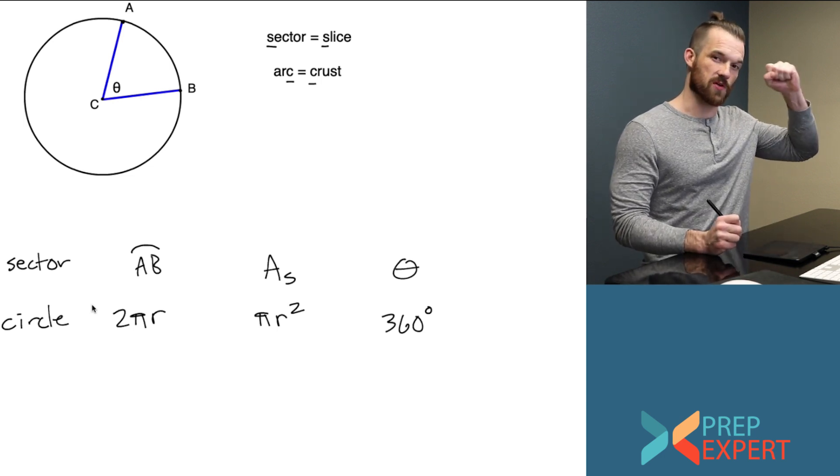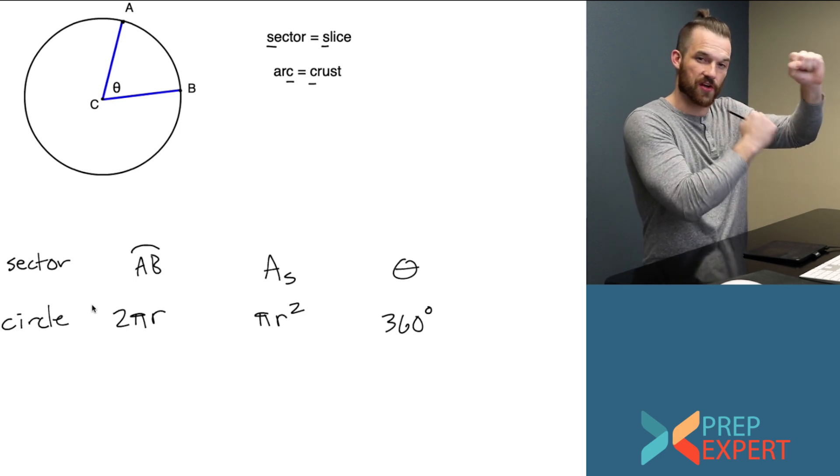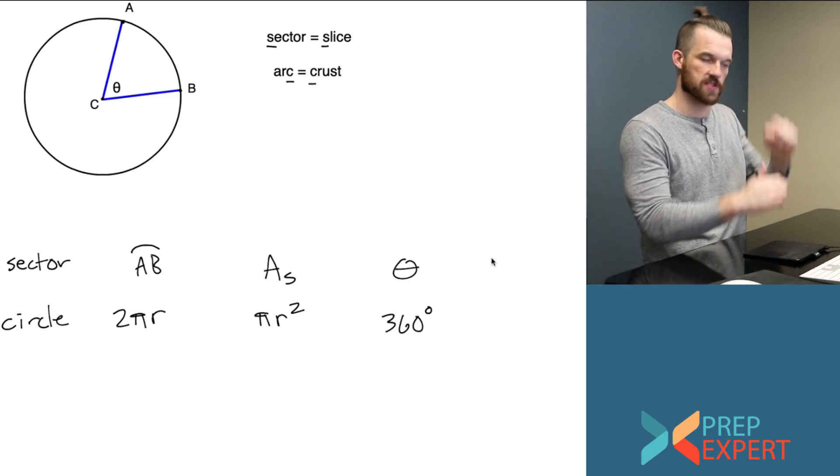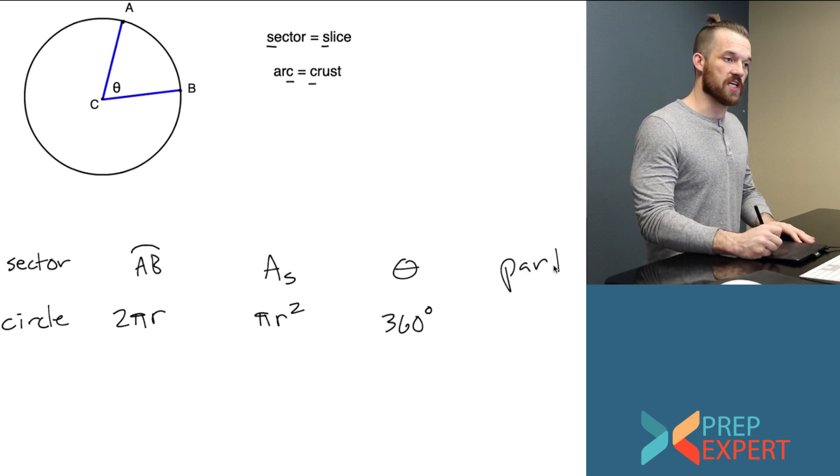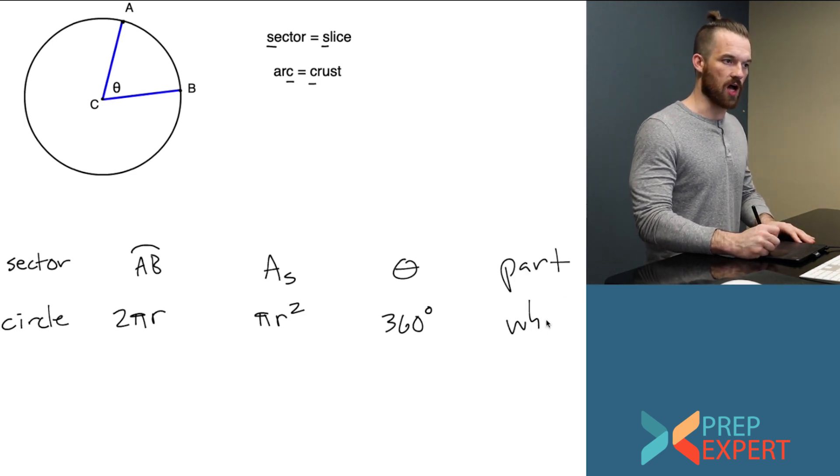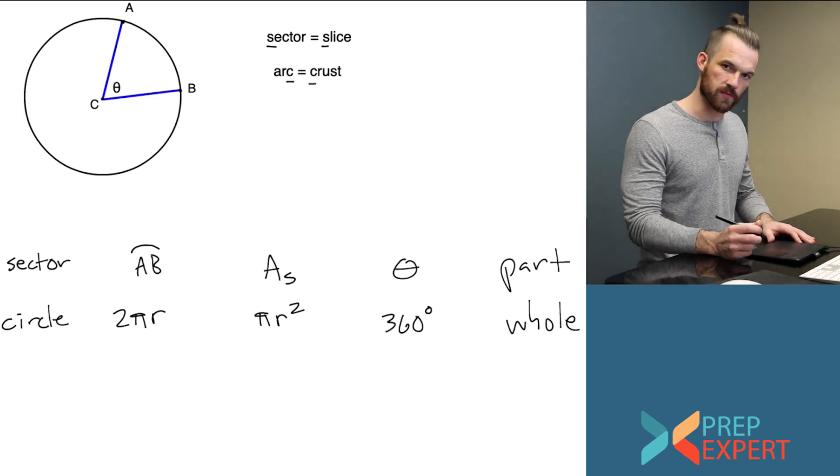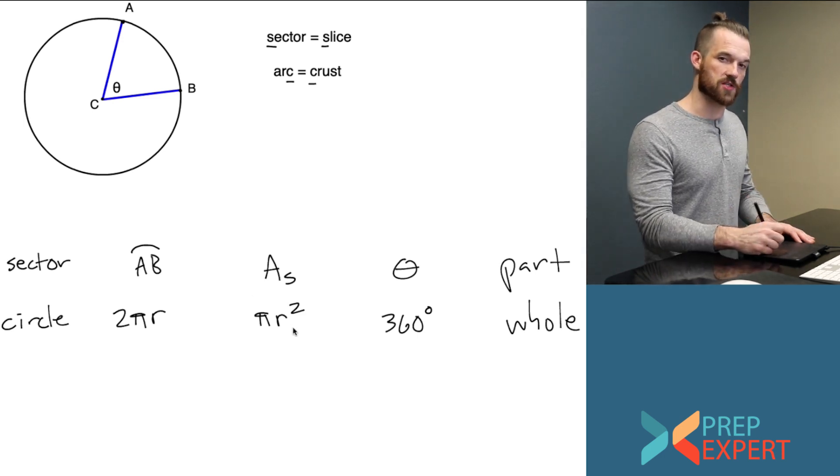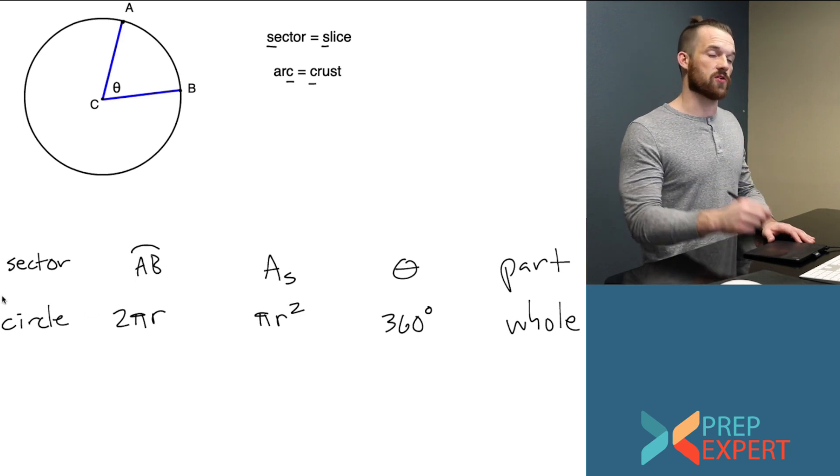On top is a characteristic of a sector. On bottom is a characteristic of the circle as a whole to which that characteristic corresponds. In other words, we could call each of these a part on top and the whole that it's a part of on the bottom.